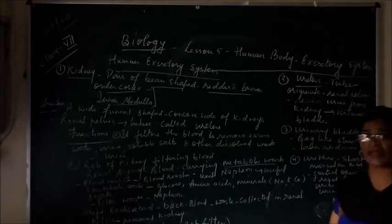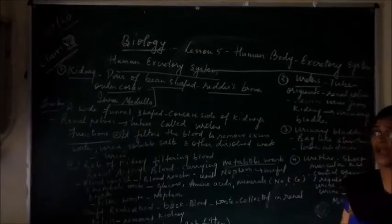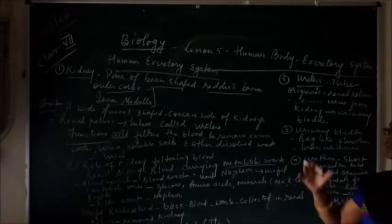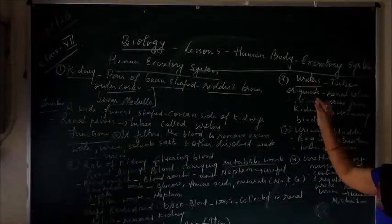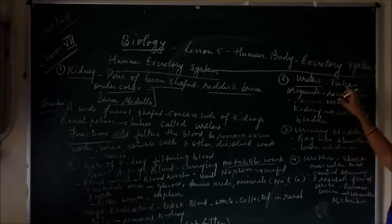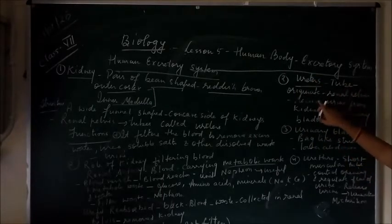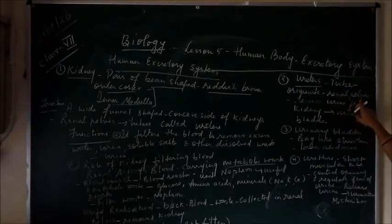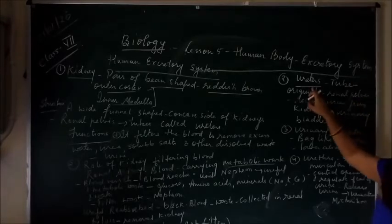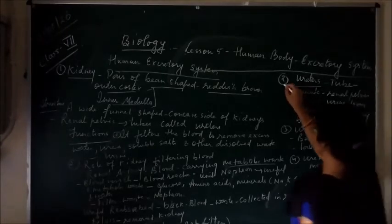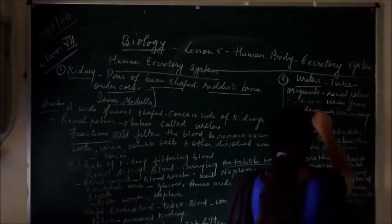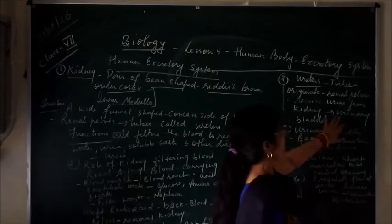The ureter is a tube-like structure through which the urine formed in the kidney passes. It is a passage that originates from the renal pelvis, and the ureters receive the urine from the kidney. This urine received by the ureters then goes to the urinary bladder.